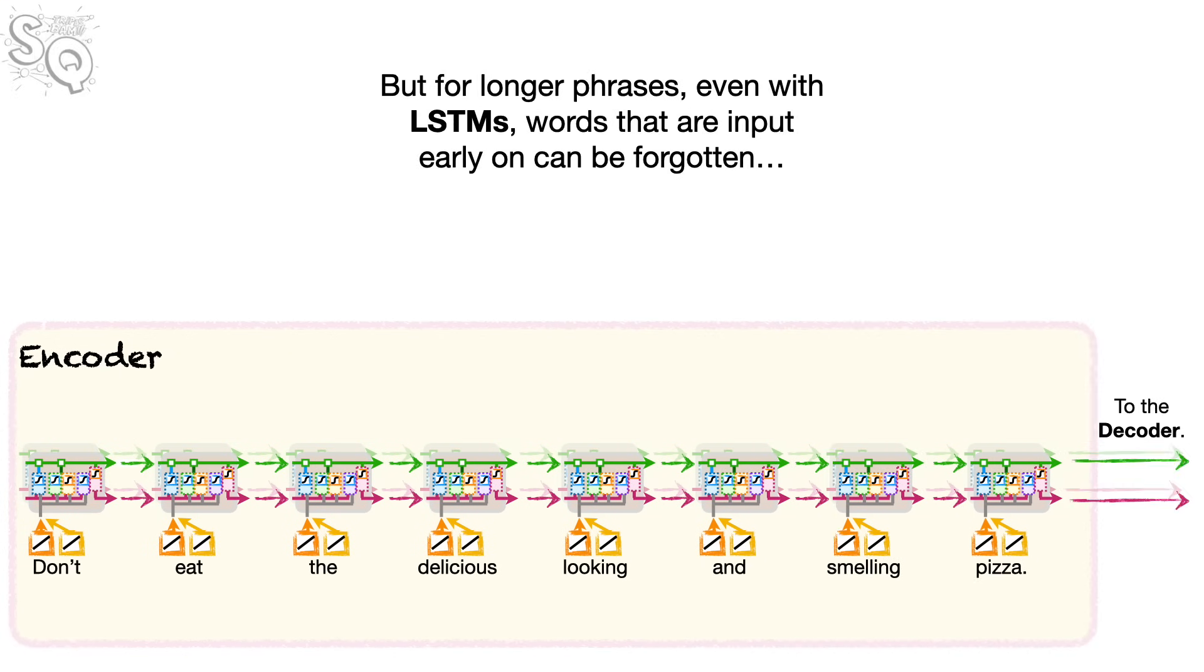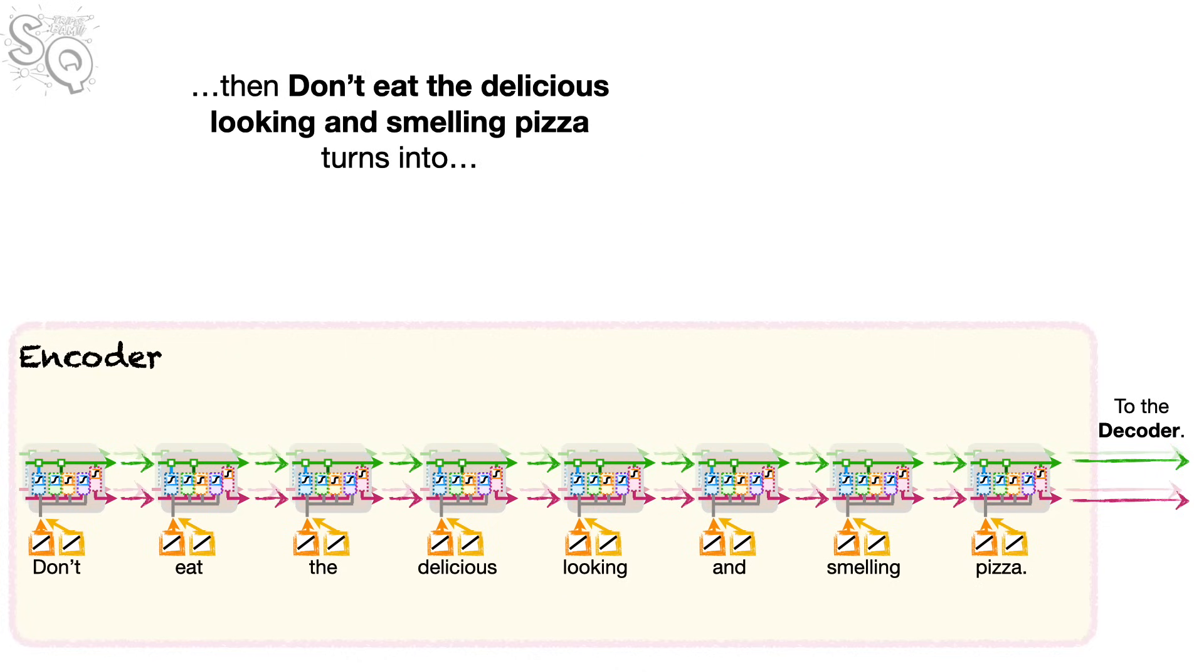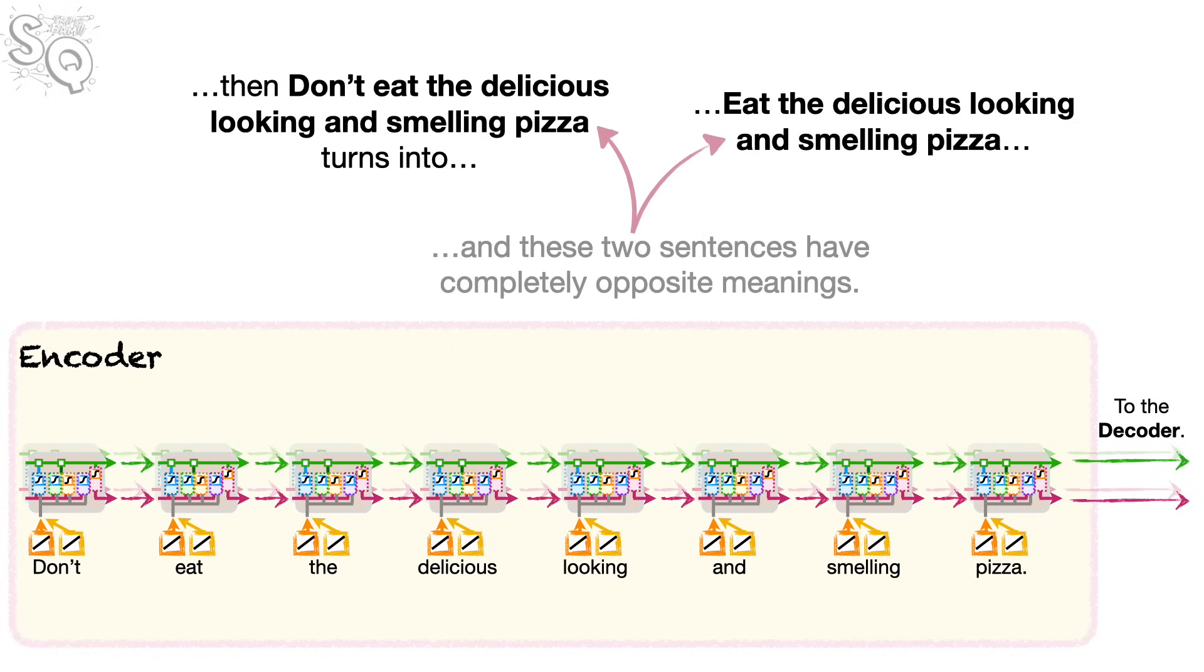Don't eat the delicious-looking and smelling pizza. But for longer phrases, even with LSTMs, words that are input early on can be forgotten. And, in this case, if we forget the first word, don't, then don't eat the delicious-looking and smelling pizza turns into eat the delicious-looking and smelling pizza. And these two sentences have completely opposite meanings. So, sometimes it's super important to remember the first word.